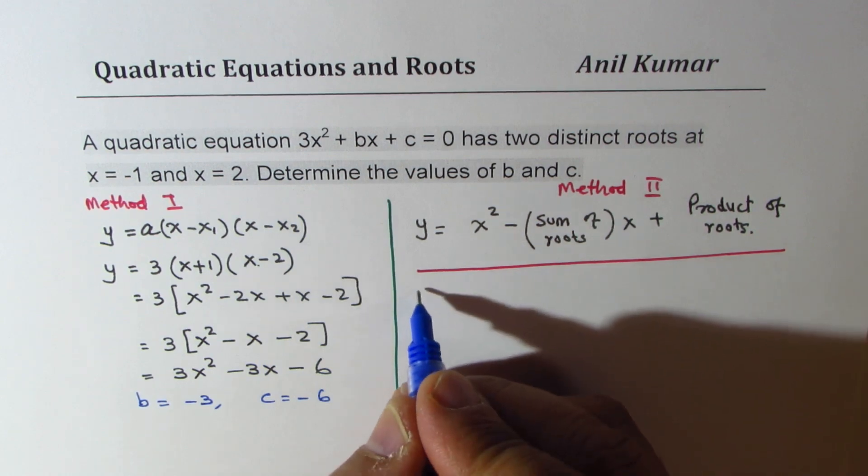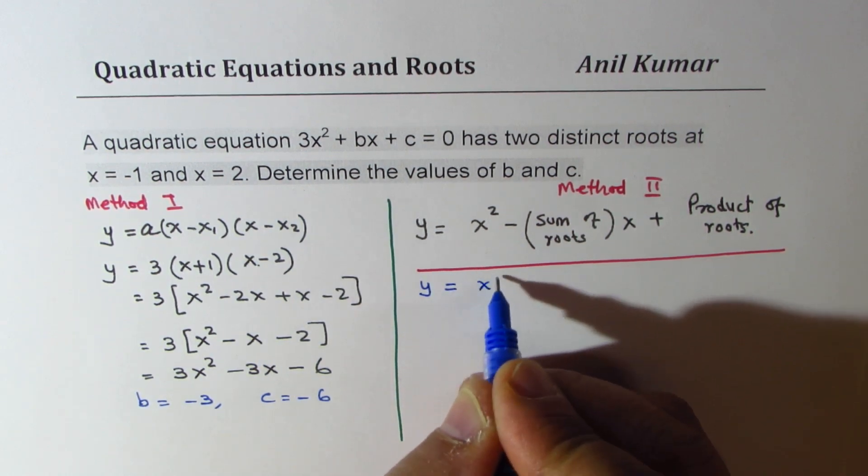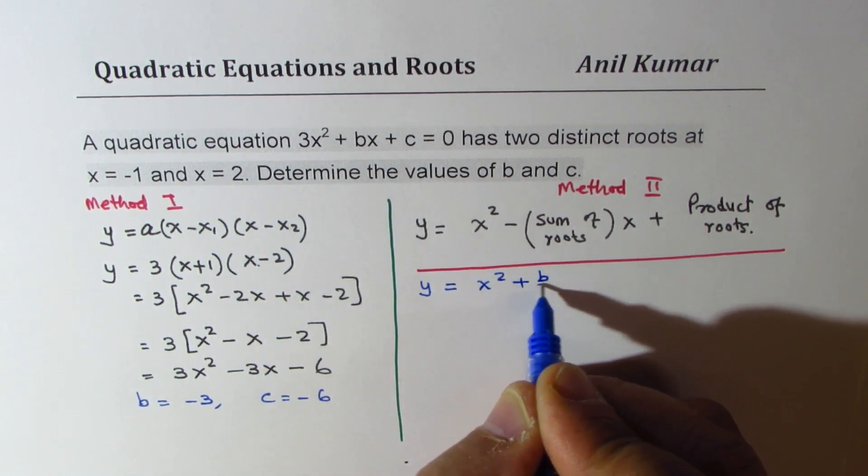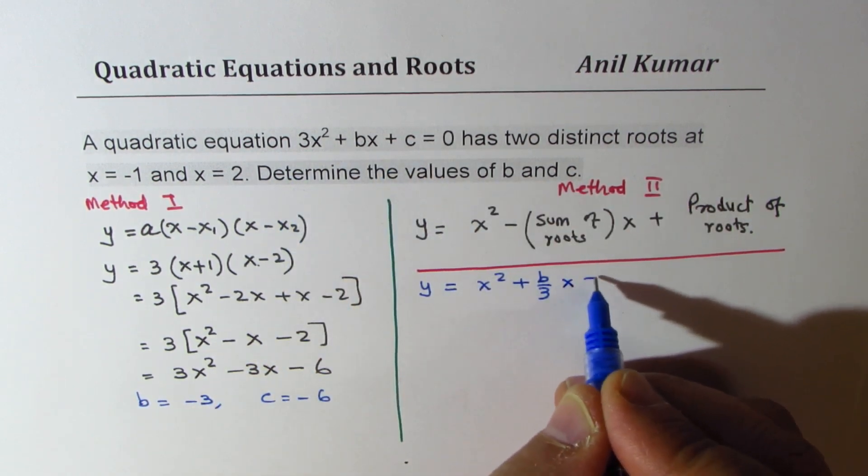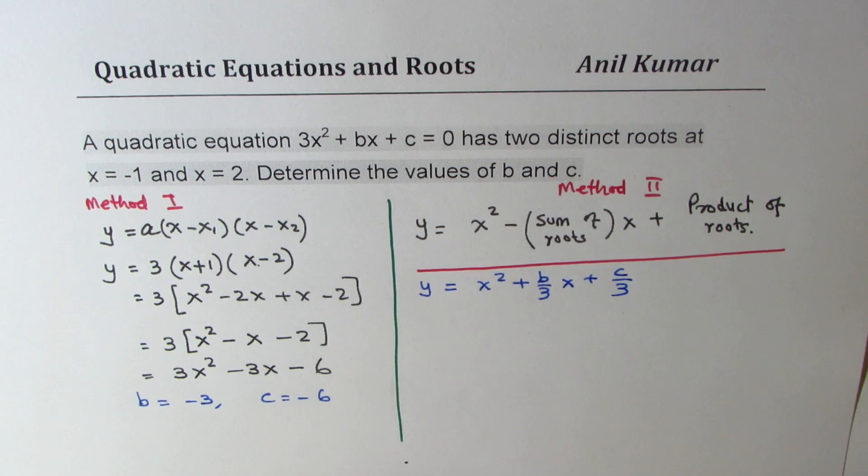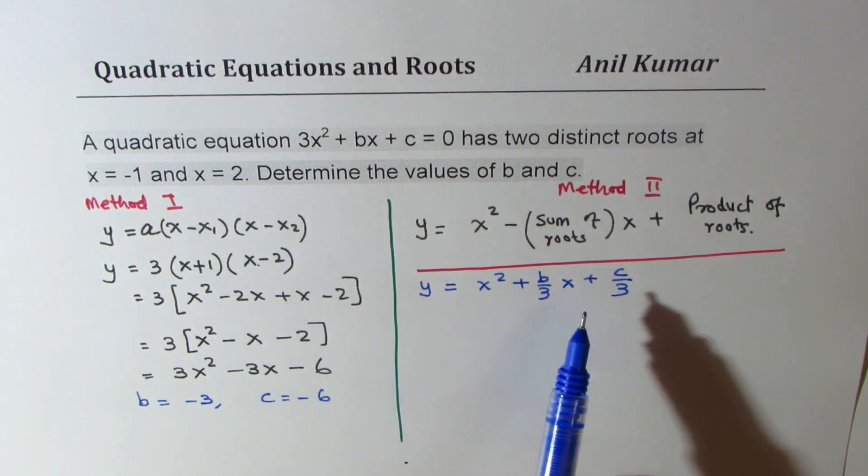Now, in our case, I'll rewrite this equation as y equals x squared plus b over 3 times x plus c over 3. So we got all this.